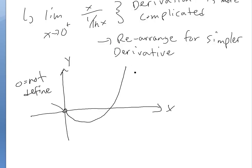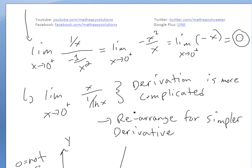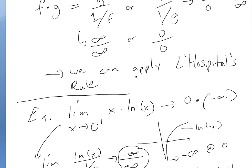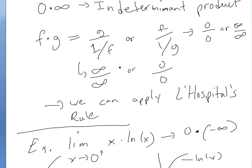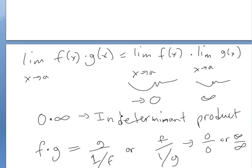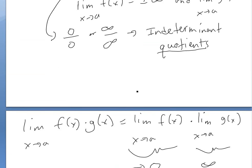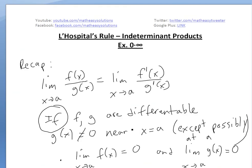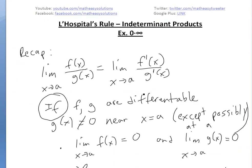That's all for today. Hopefully you learned about this: if you have a form different from the standard conditions for L'Hôpital's Rule — infinity over infinity or 0 over 0 — you can rearrange the expression to apply it. A future video will show how to handle indeterminate differences as well. Stay tuned for another Math Easy Solution.